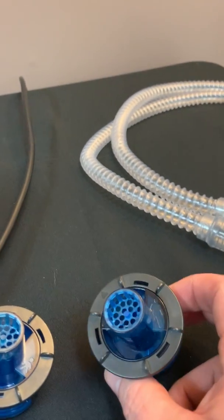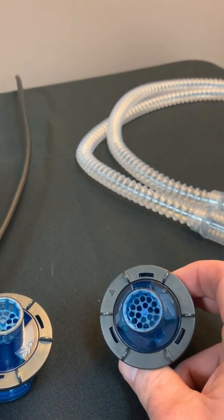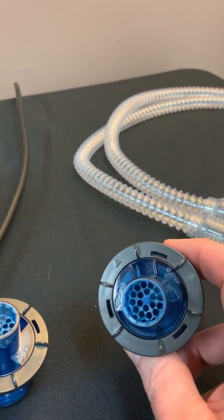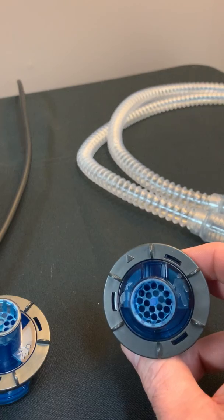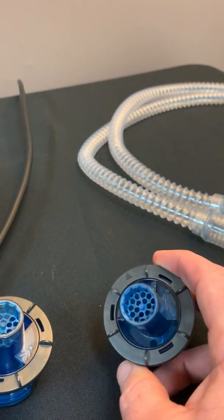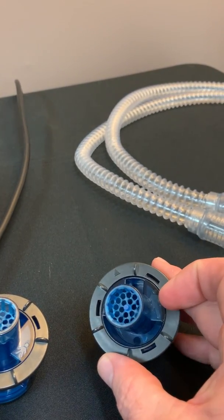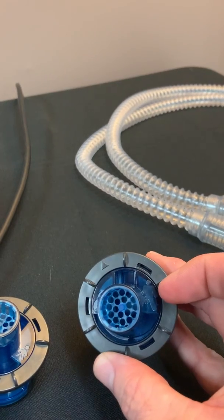But the other thing that you're going to need when you use a dual limb circuit on the Vivo 65 is you're going to need the exhalation valves and these are our two exhalation valve inserts. This is the adult insert and as you can see here on the side of the valve there is a large person.